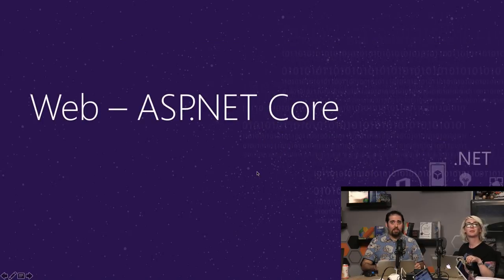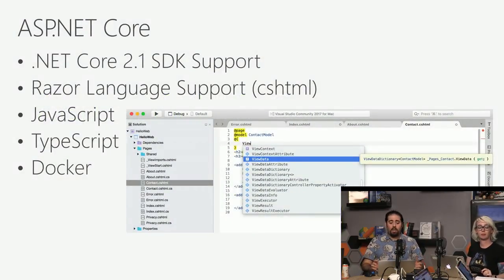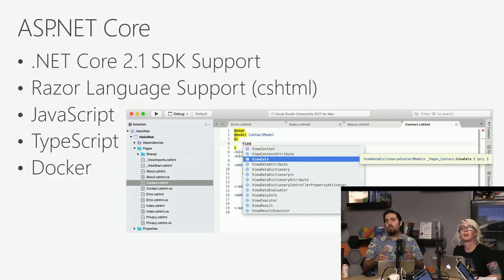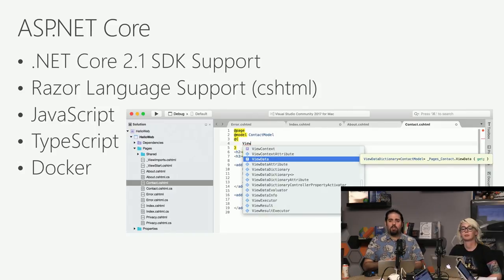I'd like to talk a little bit now about ASP.NET Core in Visual Studio for Mac. ASP.NET Core allows you to develop and build cloud-based, internet-connected, cross-platform applications. You can create web apps, services, backends, and even connect your coffee pot to the internet using IoT. Visual Studio for Mac supports .NET Core 2.1, the latest version of the .NET Core SDK. You can create web apps using Razor Pages or MVC, in addition to ASP.NET Web API projects.